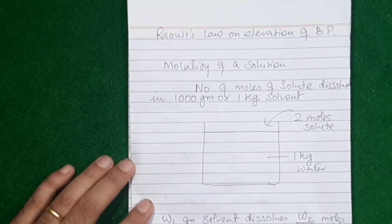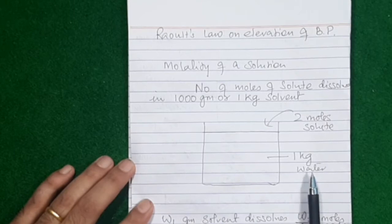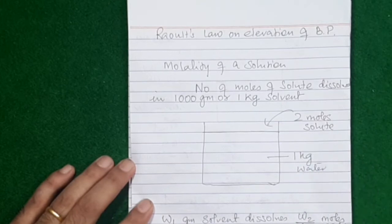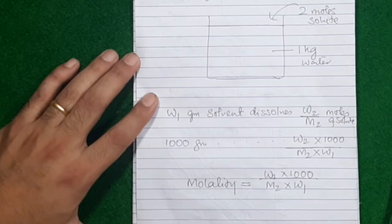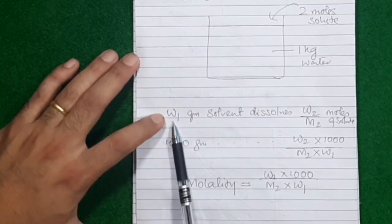In order to express the concentration of a solution in molality, you always need one kg or 1000 grams of solvent. If you don't have 1000 grams of solvent, you can't directly express the concentration in molality. So I need a formula with which you can express the concentration of any solution without being restricted to one kg of solvent.